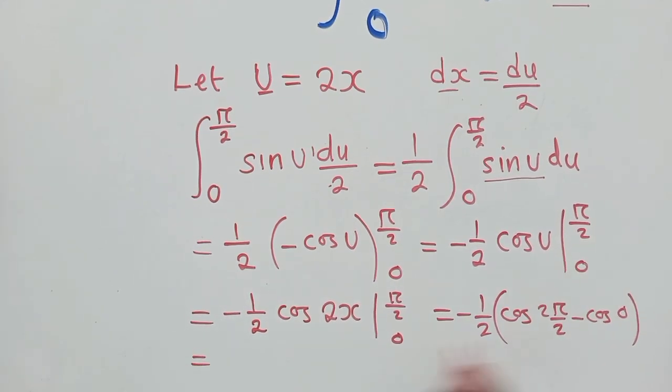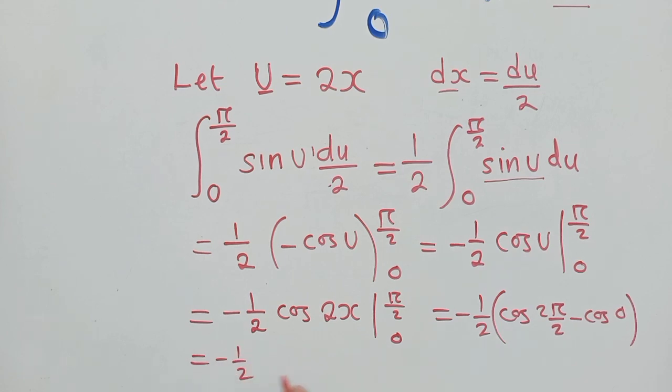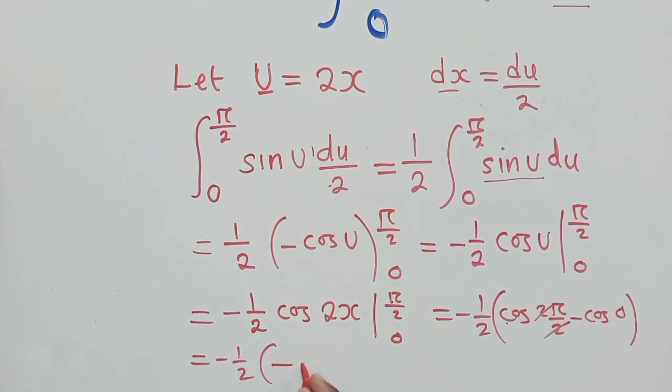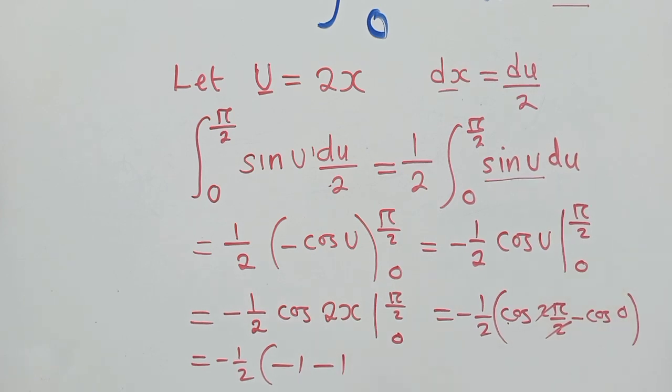So now from this stage, we can say negative 1 over 2. Here, this and this will go, so we'll remain with cos π. The cos π, it's negative 1. Minus cos 0, it's a 1.